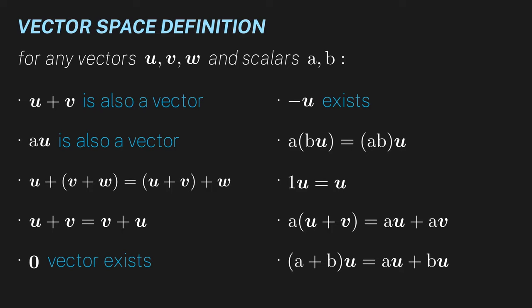It's fairly straightforward to check that polynomials satisfy all of these. Seriously, pick any of these rules and plug in polynomials for u, v, and w, and real numbers for a and b. You'll see that it holds true. Hopefully this also shows you how things other than columns of numbers and arrows can act as a vector.